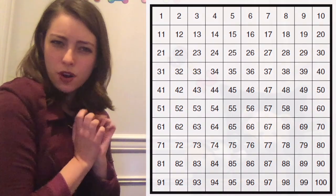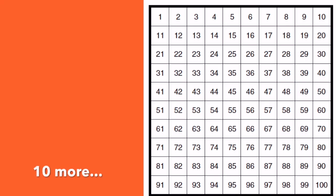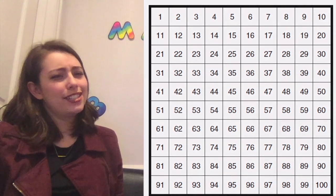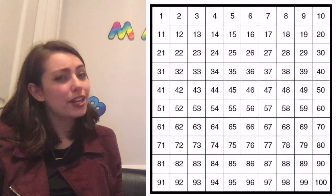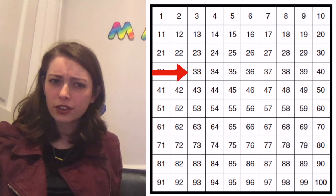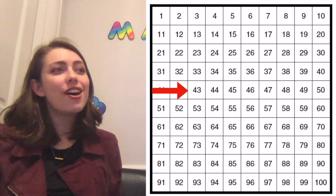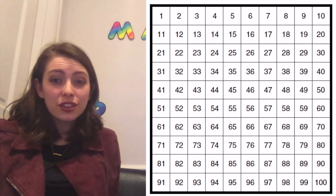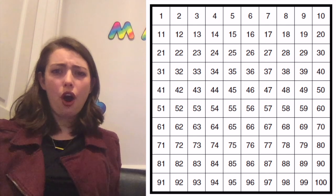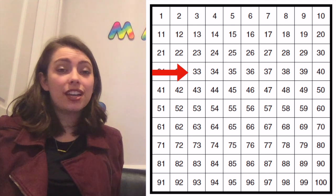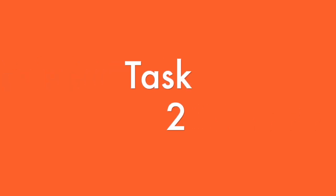You were all able to find one more and one less. Now it's time to find 10 more and 10 less. You ready? So first, I need you to find the number that is 10 more than 33. 10 more than 33 is 43. But where is that 43? It's right below 33. So all we have to do is slide down one to add 10.